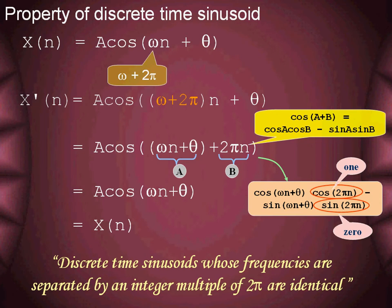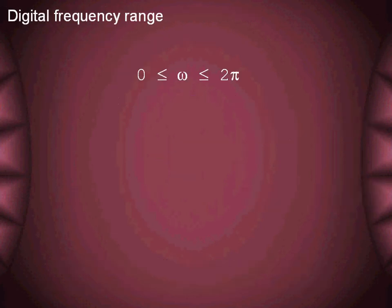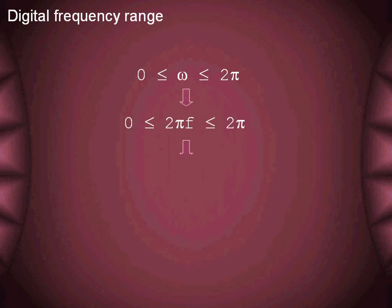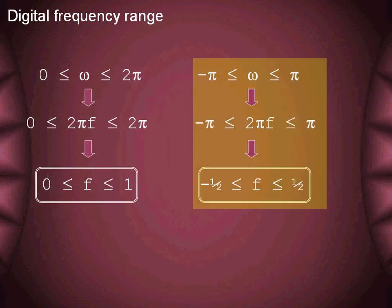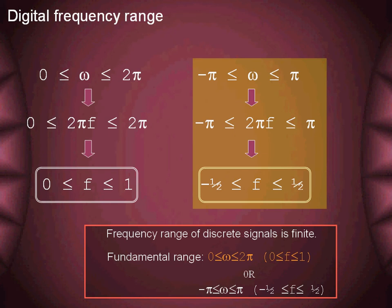This periodicity affects the range of digital frequency. To get the range of digital frequency, we apply the periodicity property just discussed, which conveys that digital signals have a fundamental range between 0 to 2π. This results in a digital frequency range restricted between 0 to 1. Also, the period of 2π can be measured from −π to +π, resulting in a digital frequency range between −½ to +½. Hence, the frequency range of discrete signals is finite.